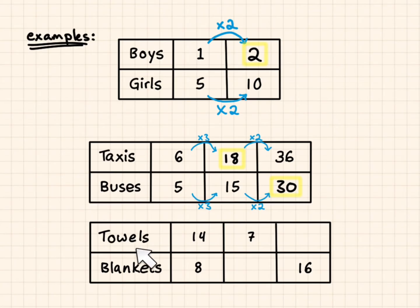The ratio of towels to blankets is 14 to eight. If there's seven towels, that's dividing 14 by two. I have to divide eight by two to get four blankets. To get to 16 blankets, I have to multiply the blankets by four. So I also have to multiply the towels by four. I get 28 towels.